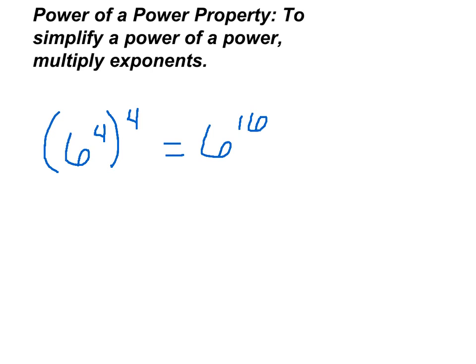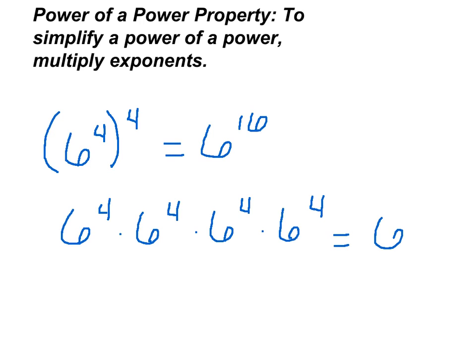If you had written this out, it would have been 6 to the 4th times 6 to the 4th times 6 to the 4th times 6 to the 4th. And as the previous slide showed you, you would add the exponents in this situation. 4 plus 4 plus 4 plus 4 is 6 to the 16th power.